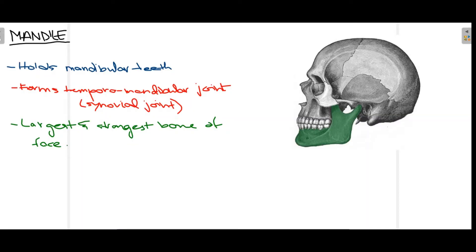The mandible is that part of your face that holds your mandibular teeth. It also articulates with the base of your skull through the temporomandibular joint. The base of the skull is the glenoid fossa, and the condylar process of the mandible articulates with it, forming the temporomandibular joint, which is a type of synovial joint.